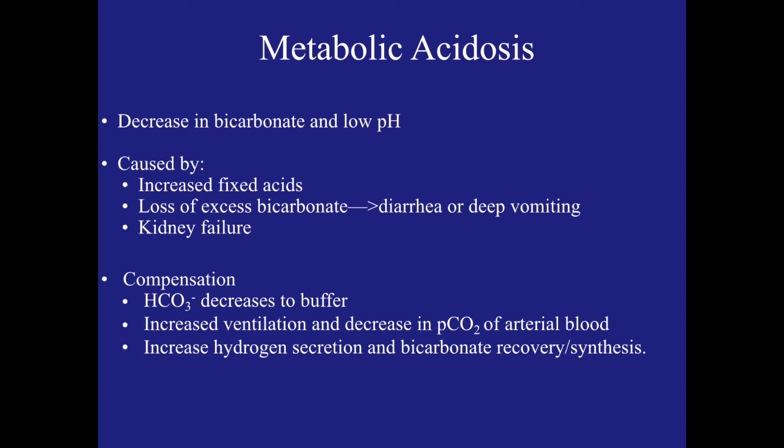Some of the ways that the body compensates for metabolic acidosis is by buffering, so the bicarbonate decreases. Also there would be increased alveolar ventilation, and therefore a decrease in the partial pressure of CO2 of arterial blood, and this would occur within seconds to minutes. Also, if the kidneys are functional, they will increase hydrogen secretion and bicarbonate recovery and synthesis.